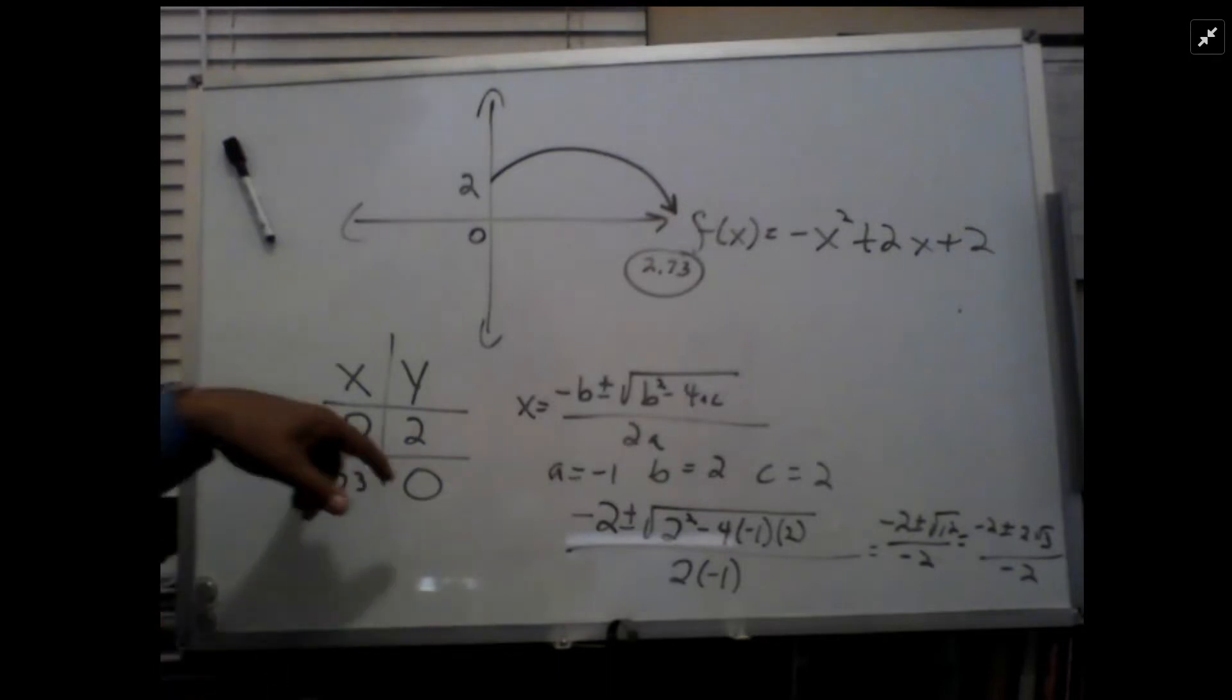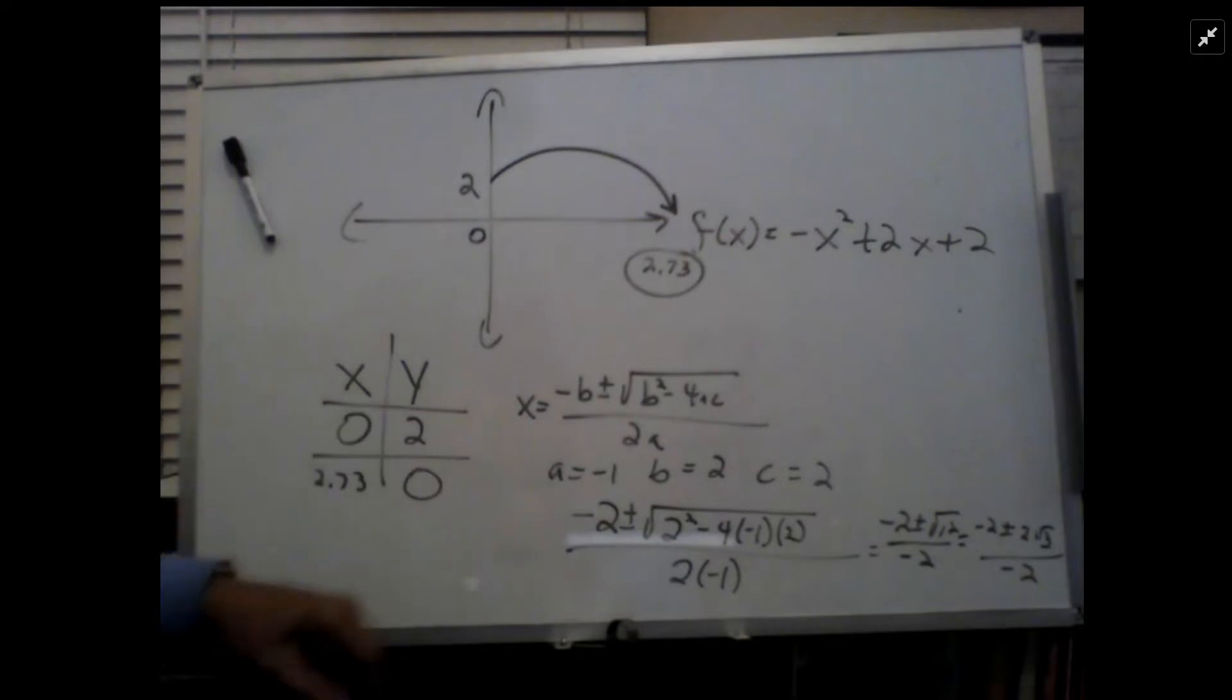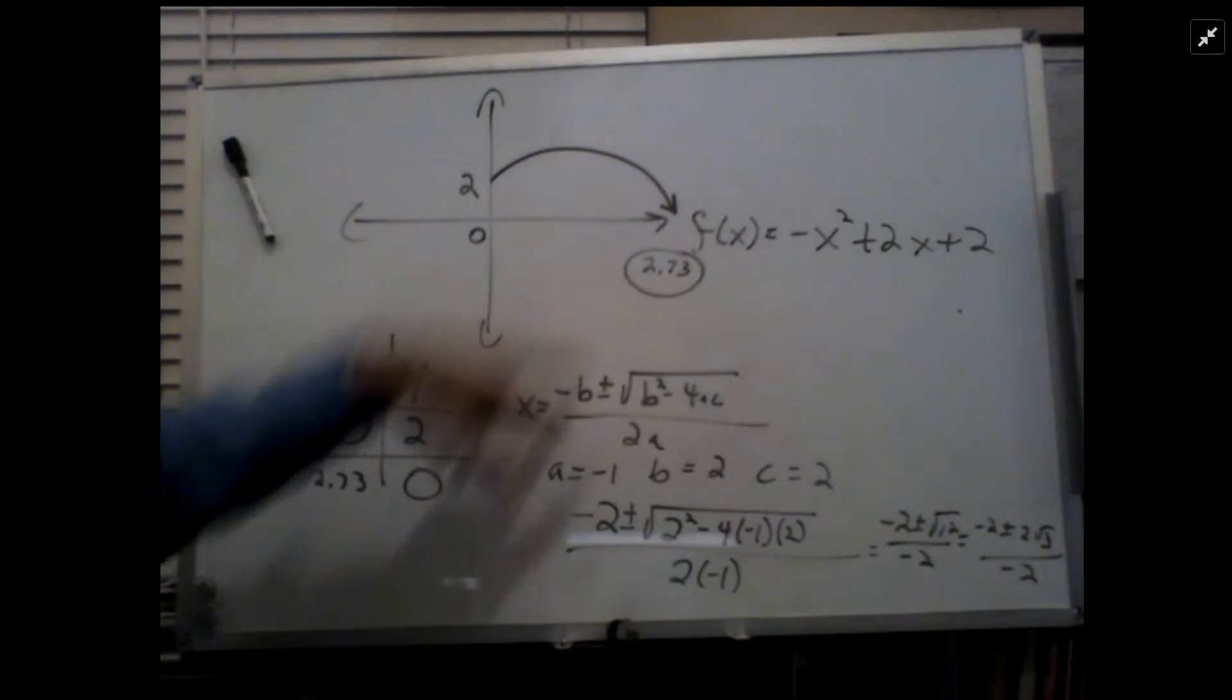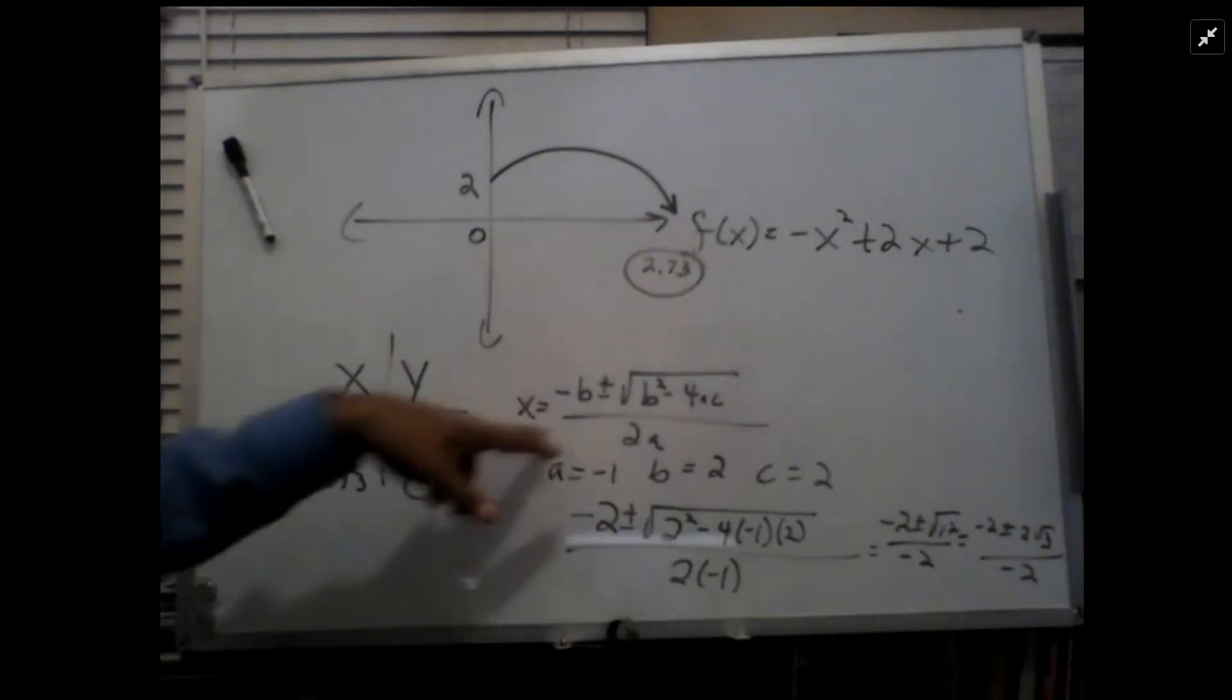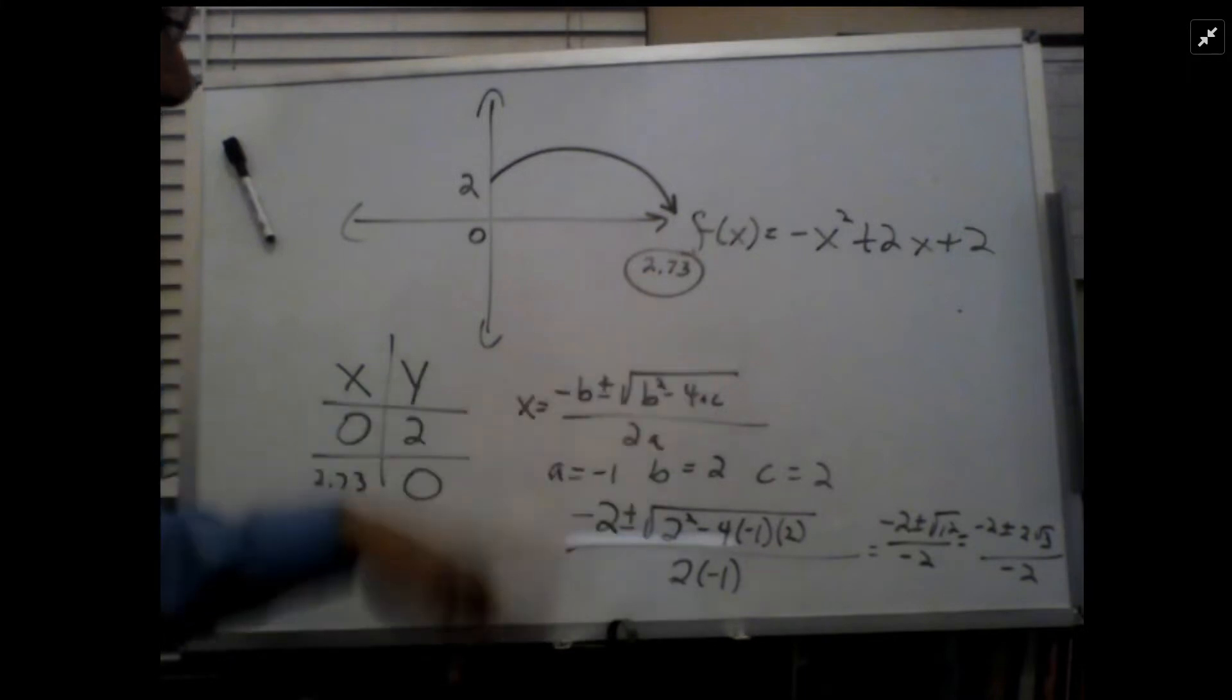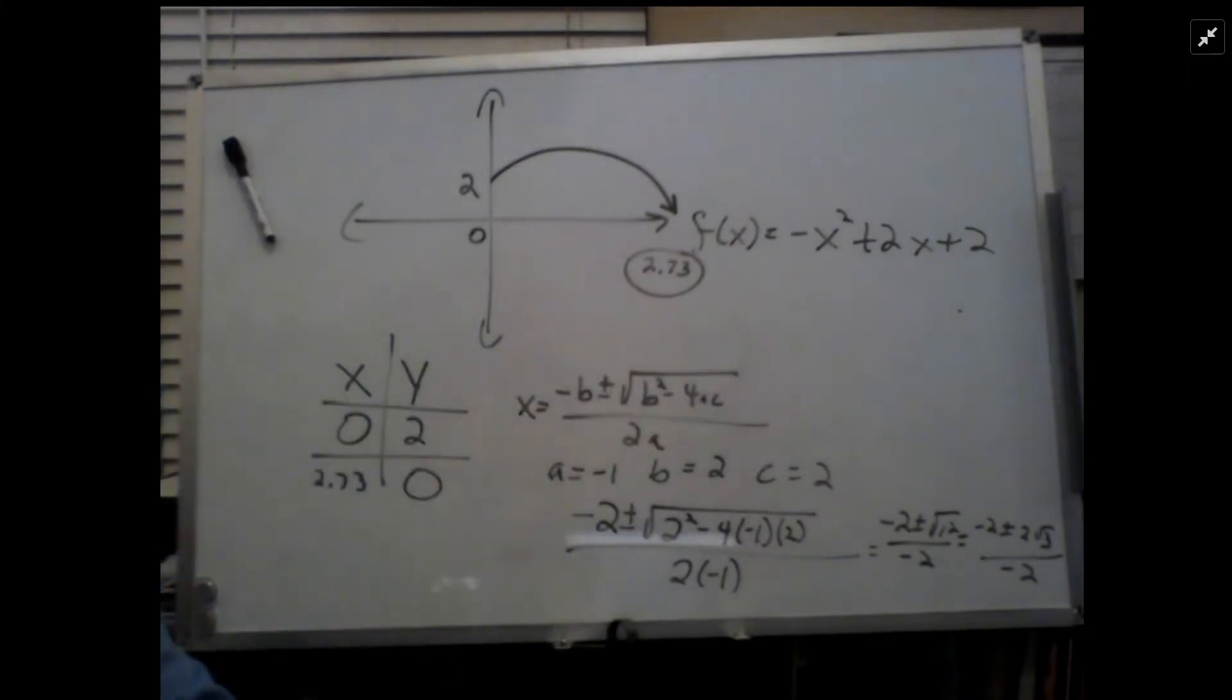So at the initial starting place, it's at zero, two. To find the horizontal distance, we're going to use x equals negative b plus minus square root of b squared minus 4ac over 2a, the quadratic formula.